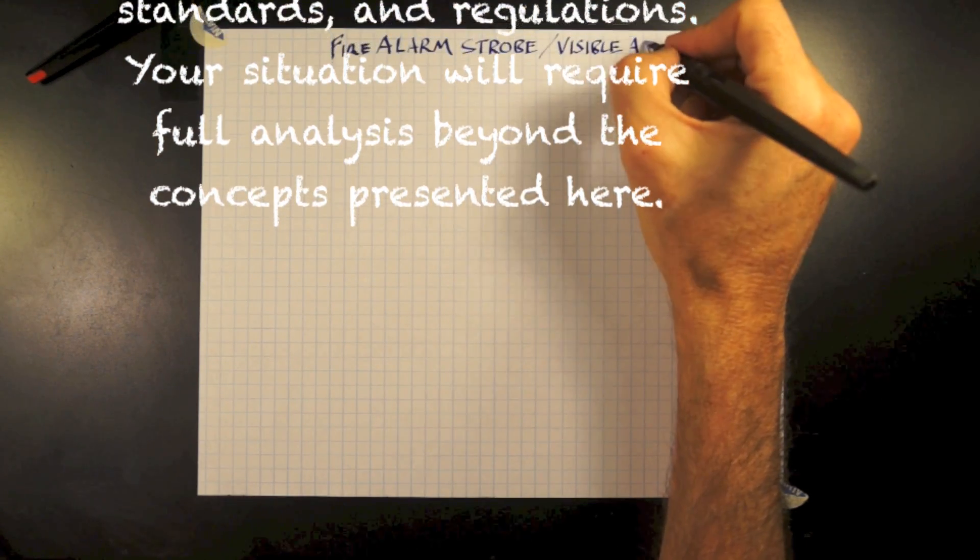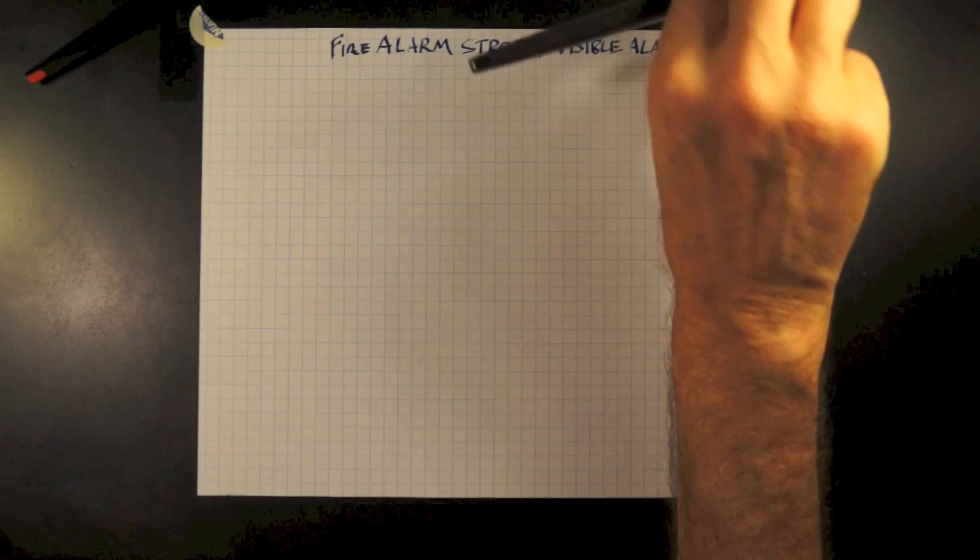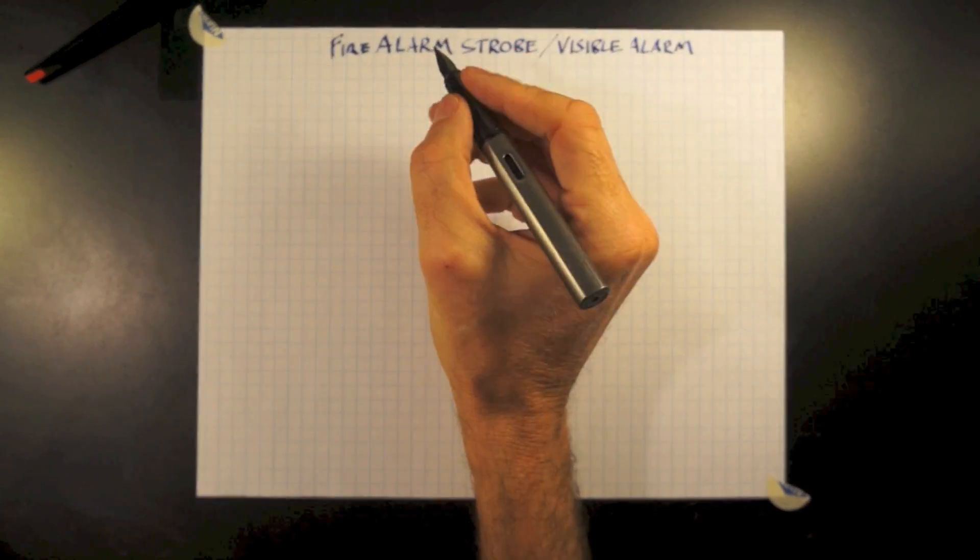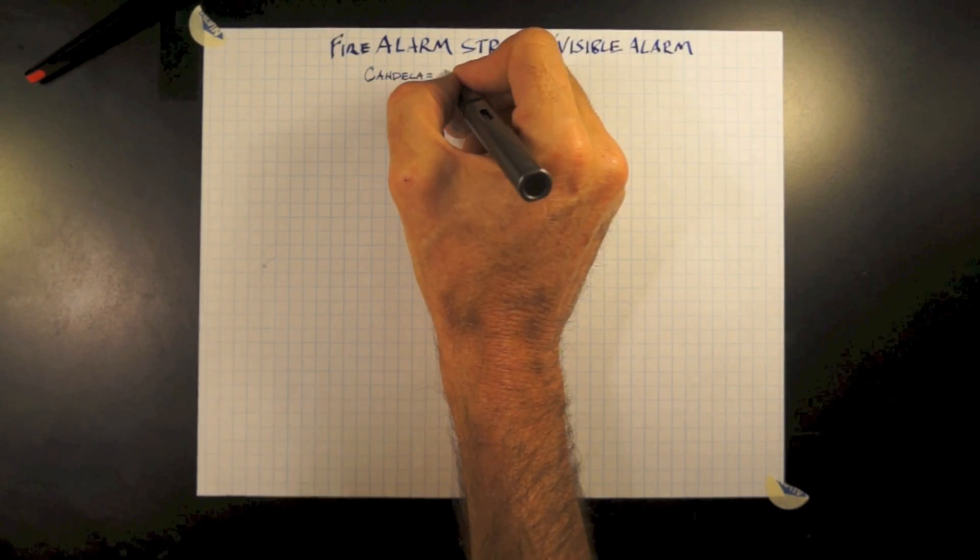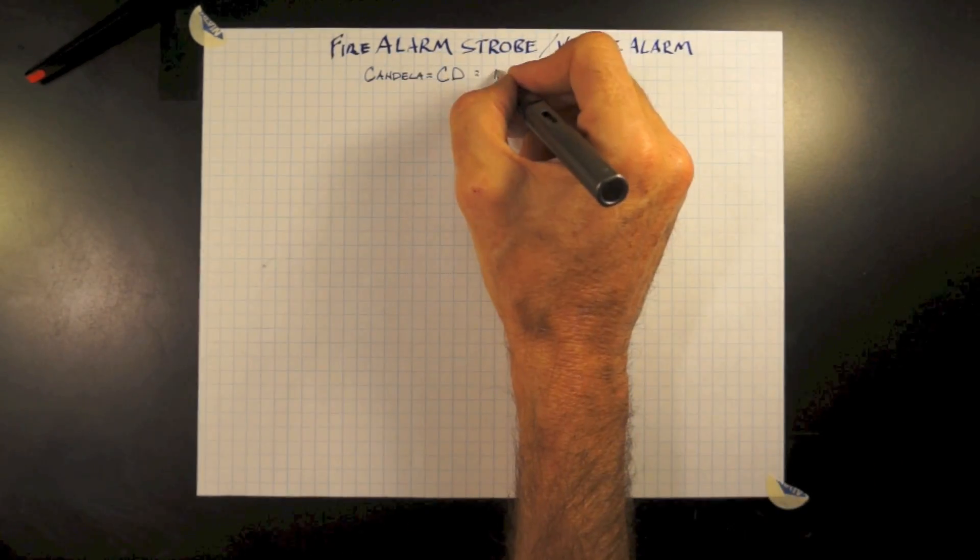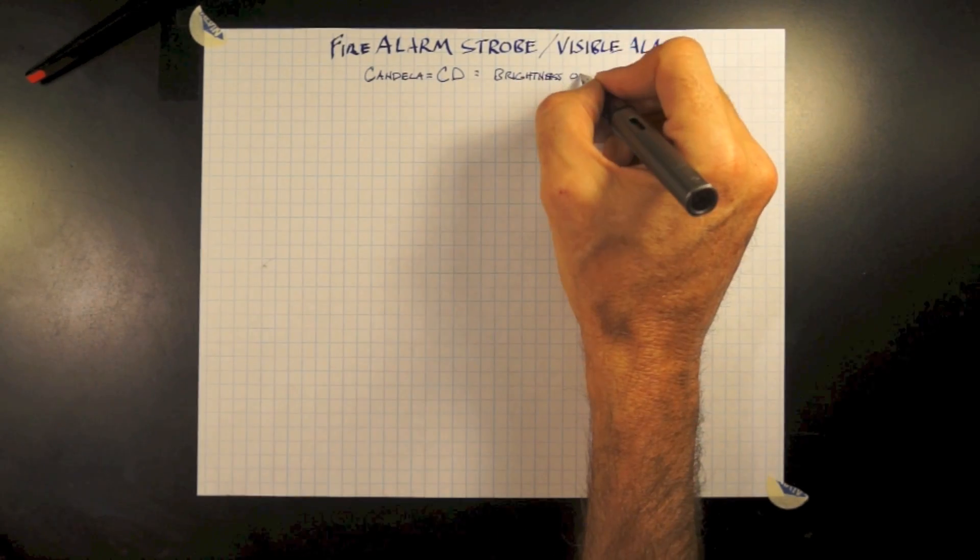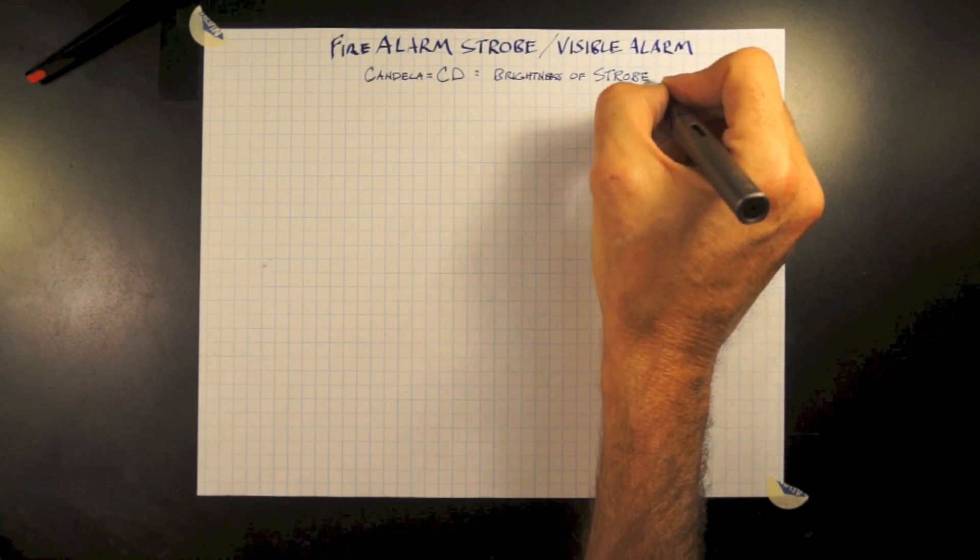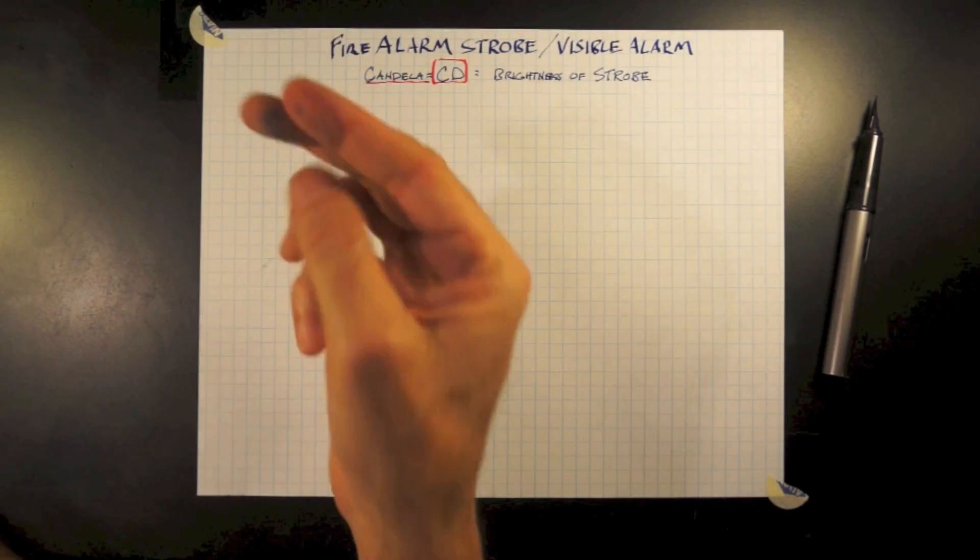Your situation will require full analysis beyond the concepts presented here. This video covers fire alarm strobe slash visual alarm. Let's define candela first - candela is represented in code books as CD with a number, and that number indicates the brightness of the strobe.